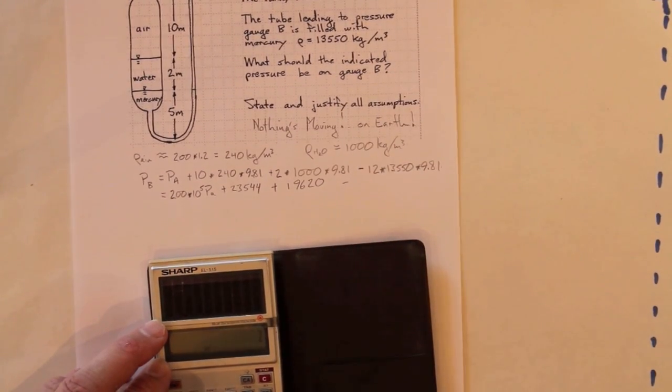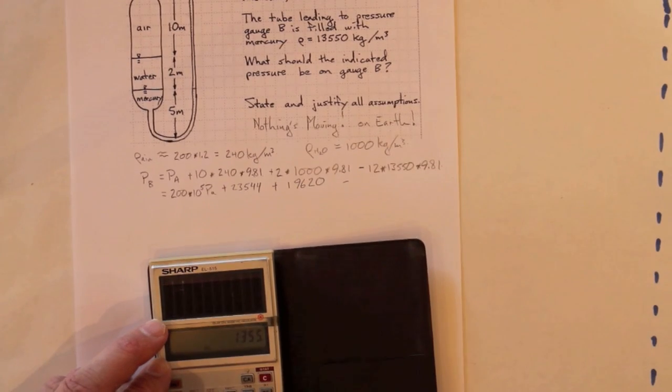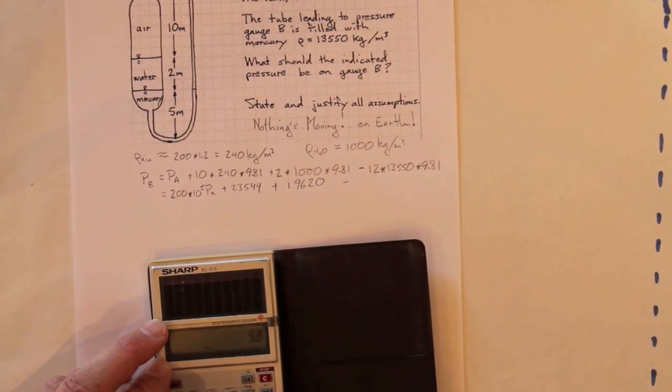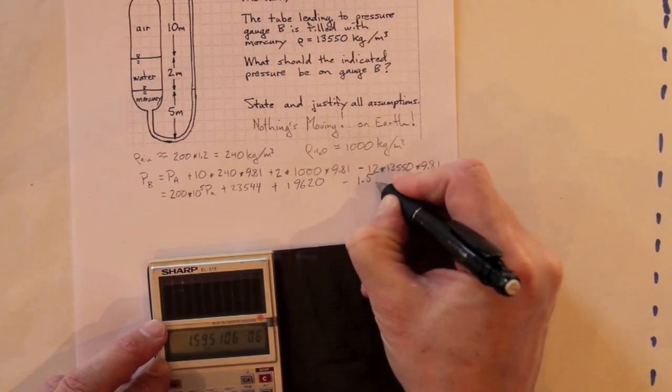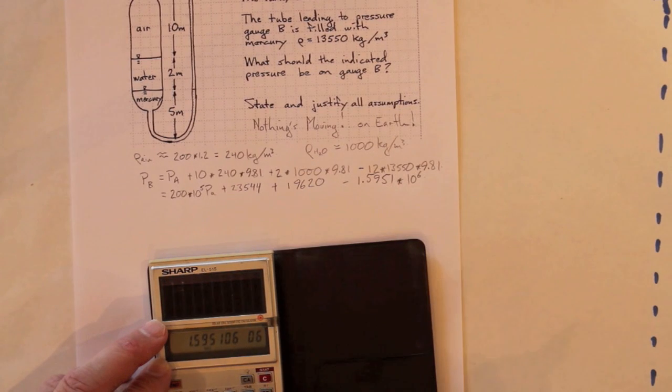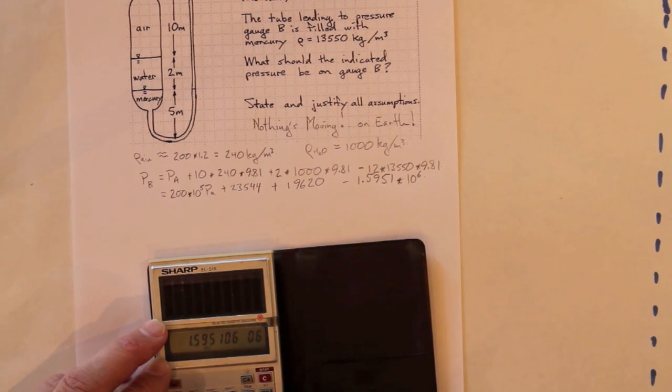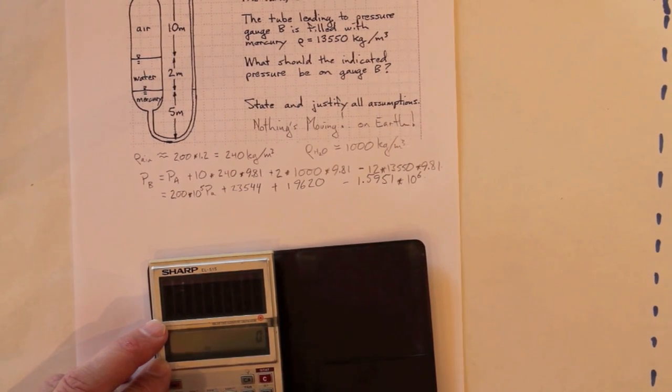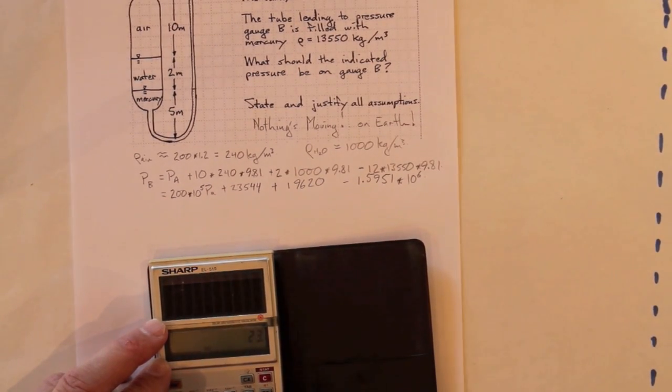Minus 12 times 13,550 times 9.81 is a big number. 1.5951 times 10 to the sixth. So, I'll clear that. That's 200 times 10 to the fifth plus 23,544 plus 19,620 minus 1.5951 times 10 to the sixth.